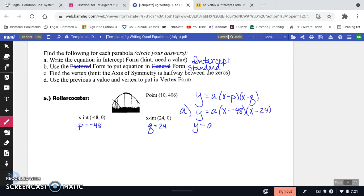So this is going to be Y equals A times X plus 48, so I'm going to change that sign, and then X minus 24. So then what we need to do is we need to figure out the value of A. Well, you have another point that's given, is the 10 and 406. So you're going to use this as your X and your Y, and plug those into your X and your Y in your equations. So I'm going to make those substitutions.